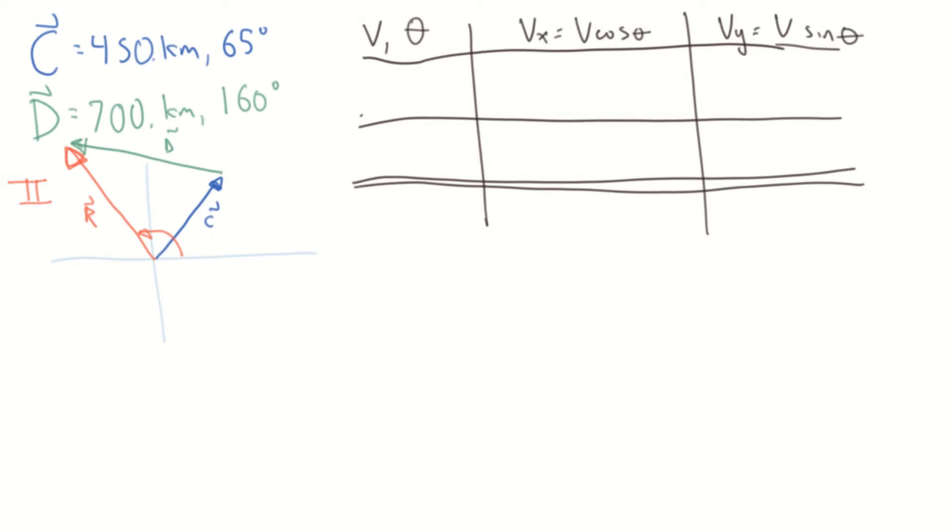So we can take our vectors and drop them in the leftmost column. This is vector C, which is 450 kilometers at 65 degrees. And vector D is 700 kilometers at 160 degrees. When we draw these out, this is the magnitude here and this is the angle. So we always want to have the magnitude and the angle. When we're dealing with the magnitude, we make sure we don't have any negatives. And when we're dealing with the angle, we make sure they're with respect to the positive x-axis.